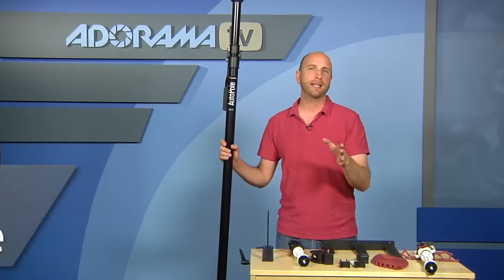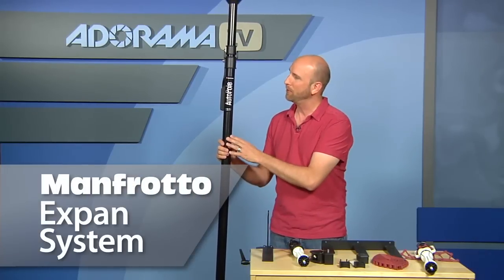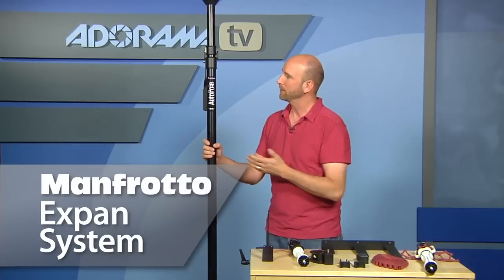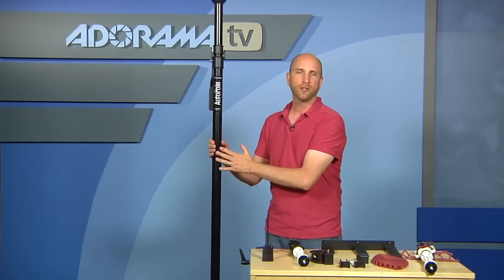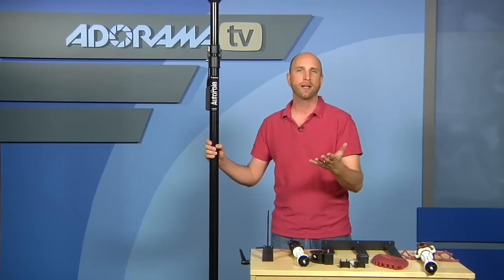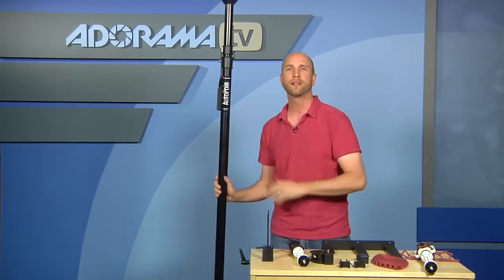Well today we're going to take a look at the X-PAN system made by Manfrotto. And the heart of that is this thing, it's called an auto pole. And for me to really show you this we're going to have to put it in the studio so we can show you how it wedges in. So we'll look at this a little bit later.